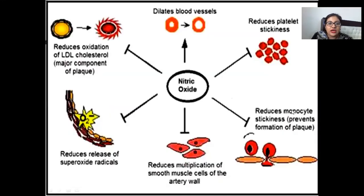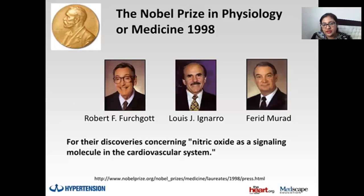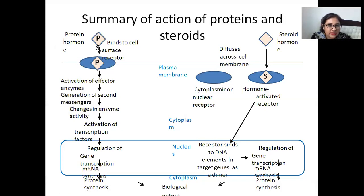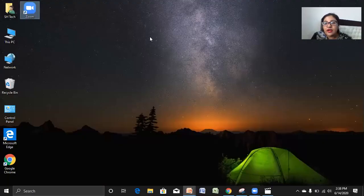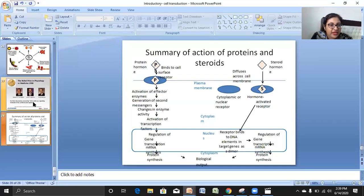These are the overall functions of nitric oxide which you should know. The scientists who won the Nobel Prize for the discovery of nitric oxide signaling are shown here. This is how the proteins are formed, and this slide is shared with you in your presentation as well. That is it everybody — thank you so much. I am now going to upload this PowerPoint presentation.